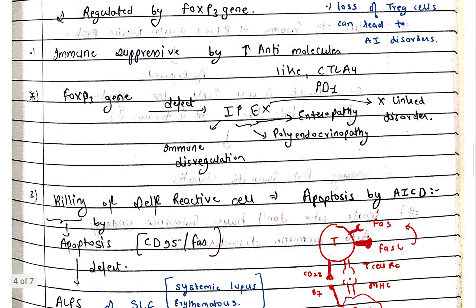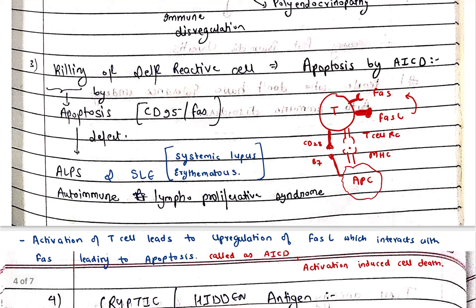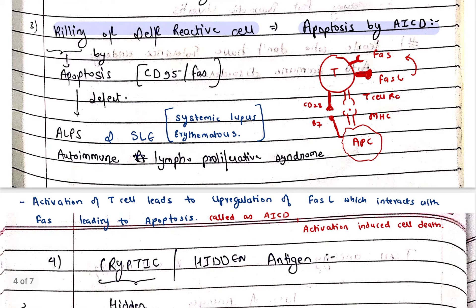Next is killing of self-reactive cells, or apoptosis by AICD — Activation Induced Cell Death. When a T cell is activated completely, there is upregulation of Fas, which leads rapidly to apoptosis. You can understand this from the diagram showing T cell activation, Fas upregulation, and resulting apoptosis.